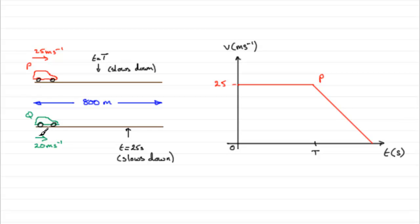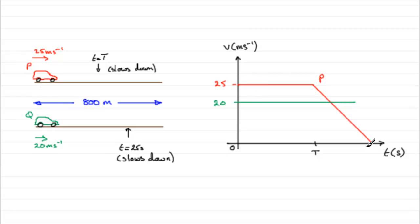For Q — we'll do Q in green. Q starts off at T equals 0 with a speed of 20, and it's moving at a constant speed, so we have a horizontal line. Now, when T equals 25, where do we stop? We know that the area under a speed-time graph represents the distance covered, and that distance has to be the same. So the area under the green graph has to equal the area under the red graph. That means the green graph has to go beyond the red graph to have the same area. After 25 seconds, Q starts to slow down and come to rest after 800 metres at a constant rate.